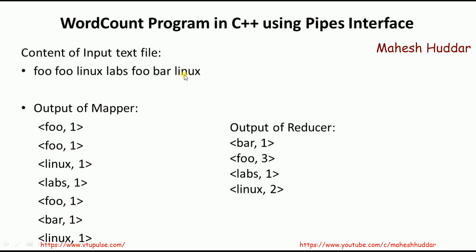What the reducer will do is take the output of the mapper as input. If a particular key is repeated, the values will be added. For example, foo is appearing three times, so the values will be added and foo 3 will be the output of the reducer.